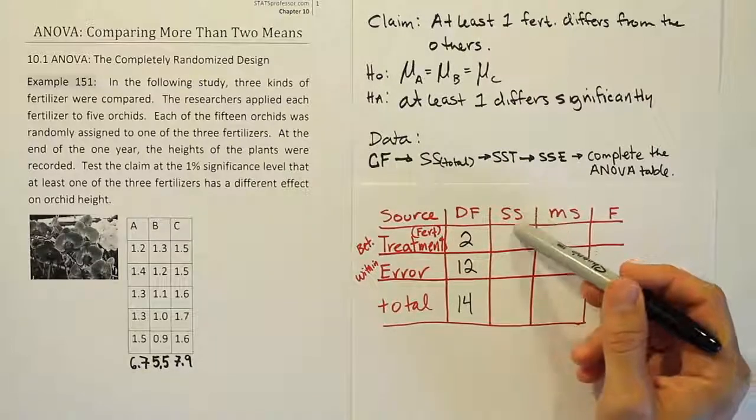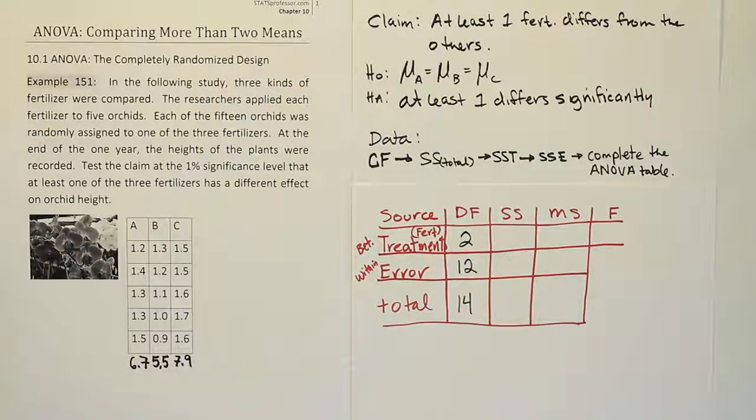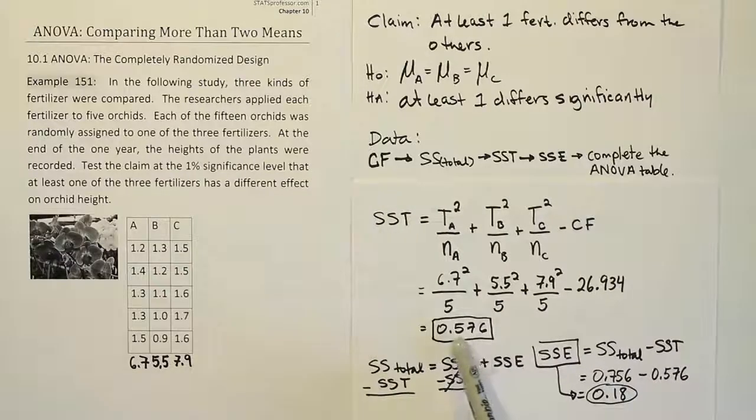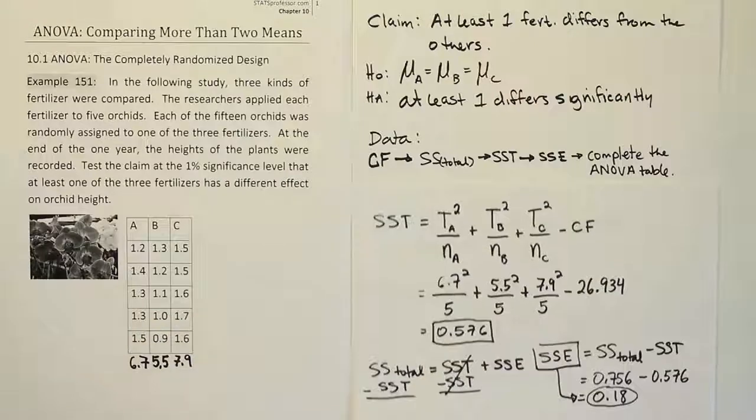Now, from there, the sum of squares value are going to come from the calculations set we did a moment ago. So let's go ahead and get those calculations back up so we can look at them. If you look at the ones that we did for treatments, the sum of squares for treatment was 0.576. SST was 0.576.